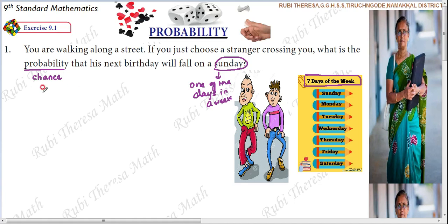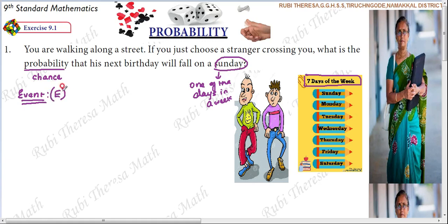Here are three to four important terms. First, what is the event? What do you mean by an event? Birthday will fall on a Sunday — this is an event. One happening, one process. Let E be the event that his birthday will fall on a Sunday. This is an event.